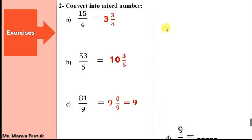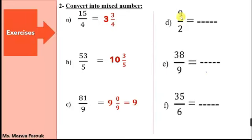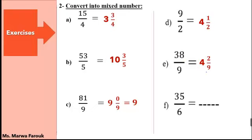Next exercises: 9 over 2, or 9 halves. 9 divided by 2 gives me 4 and the remainder is 1. So 4 is the whole number and 1 is the new numerator, and the denominator is the same. 38 divided by 9 gives me 4 and the remainder is 2. So 4 is the whole number and 2 is the new numerator; the denominator doesn't change. 35 divided by 6 gives me 5 and the remainder is 5. So it's 5 and 5 over 6, or 5 and 5 sixths.